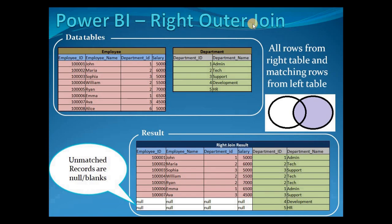Next is right outer join. Right outer join works exactly opposite to the left outer join. In right outer join, we get all records from the right side of the query, and from the left side only matching records. So in the result set, we get all department IDs available in the department query, and from the employee query only those records which have a matching department ID.